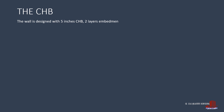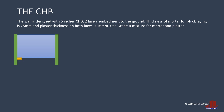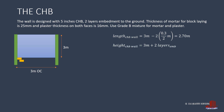Now let's estimate the masonry works, starting with the number of concrete hollow blocks. With column spacing of 3 meters on centers, the clear span of the CHB wall is 3 meters less twice of half the column width (0.3 meters), which equals 2.7 meters. The wall height is 3 meters, plus two embedded layers of 0.2 meters each, giving a total height of 3.4 meters.